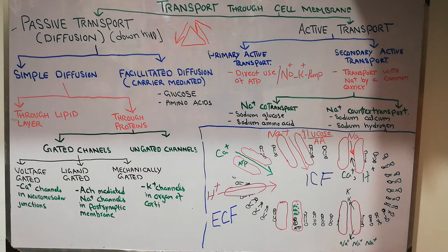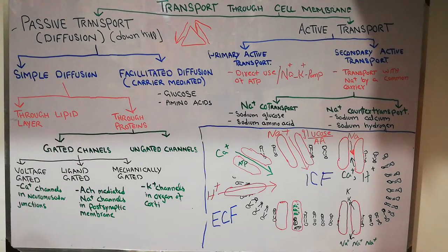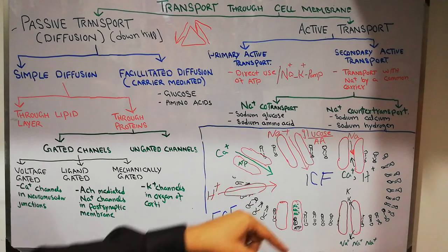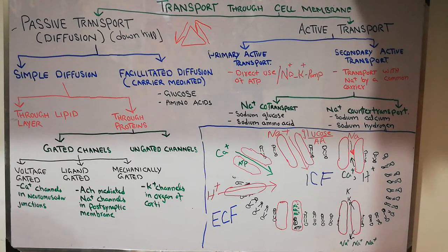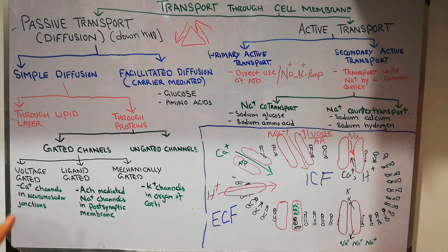In the last lecture we were discussing transport, and we discussed in detail the passive transport or downhill transport. We discussed how different substances enter through the cell membrane or plasma membrane into the intracellular fluid and go outside the cell to the extracellular fluid or ECF. In passive transport, it is a downhill movement and does not require any energy.